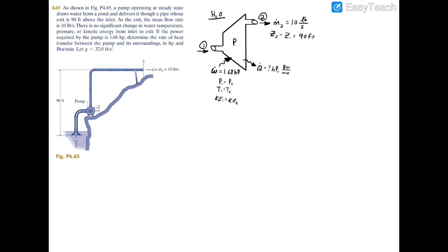Here we have a simplified schematic showing the power coming in at 1.68 horsepower and some unknown heat transfer. The pressure, temperature, and kinetic energy are equal on both sides. The change in elevation z2 minus z1 is 90 feet, meaning z1 minus z2 is negative 90 feet, and the mass flow rate is 10 pounds per second.